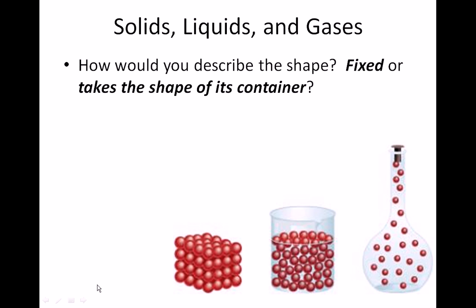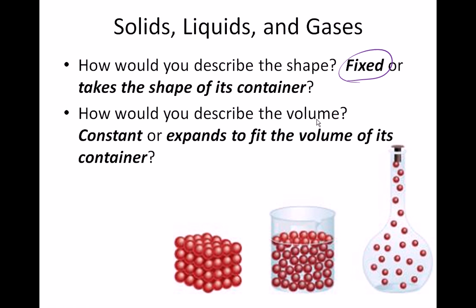Let's describe their shape. The shape of a solid depends on what the object is. A solid has a fixed shape — if I took the stapler off of my desk and put it into a round bowl, it's not going to take the shape of that bowl. It's going to continue to be a stapler. The volume of a solid is also going to be constant; it doesn't expand depending on what container it's placed in.